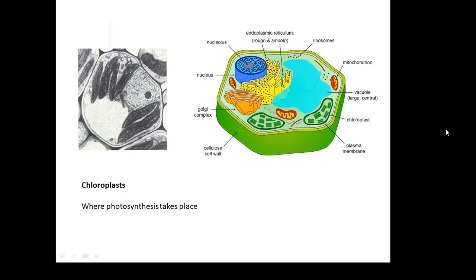Chloroplasts, this is where photosynthesis happens. These are green because they contain a chemical called chlorophyll and this is where photosynthesis happens, in the chloroplasts.